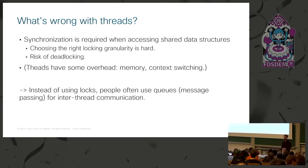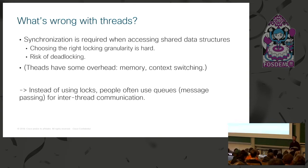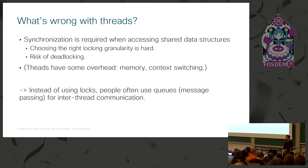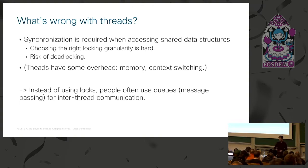Threads also have some overhead, though it's not the main reason not to use them. Instead of using shared data structures, you can use message passing — threads can communicate over a queue, and if one thread has to pass data to another you can send it over the queue and serialize it. That's a way to prevent locks and these issues, but it's also a whole different way of programming.